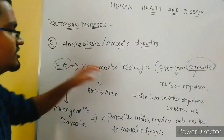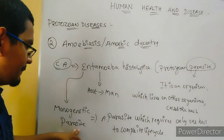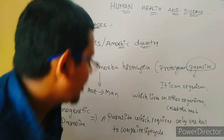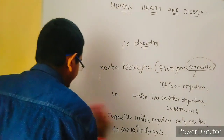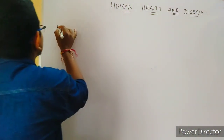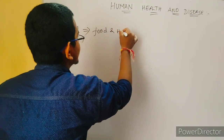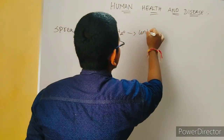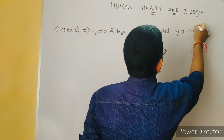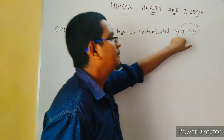To summarize: the causative agent is Entamoeba histolytica, which is a protozoan monogenetic parasite requiring only one host — man — to complete its life cycle. Now, how does it spread? It spreads through food and water which is contaminated by feces.